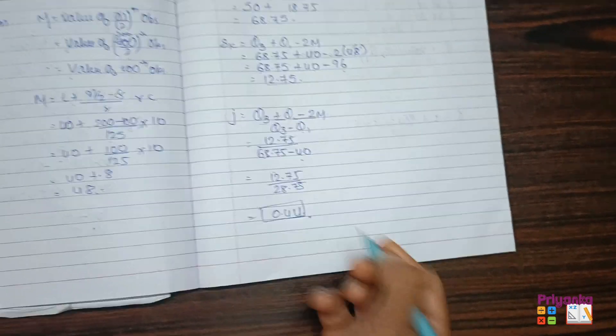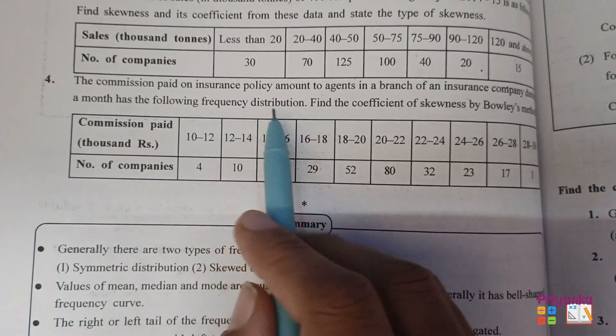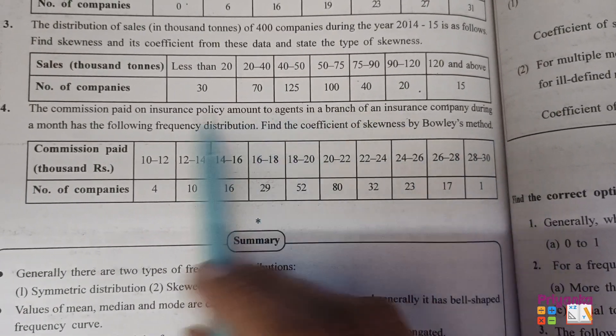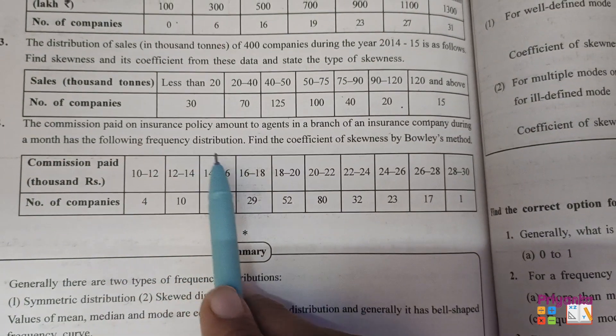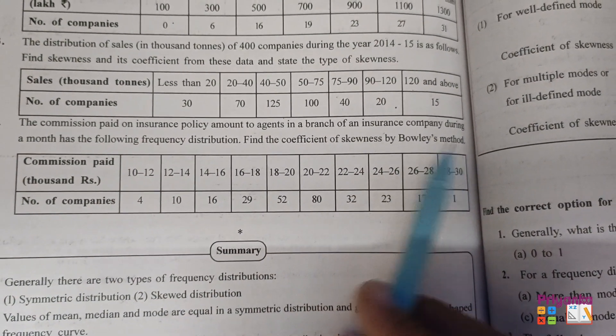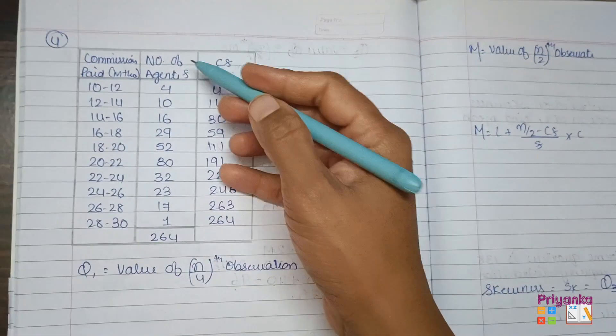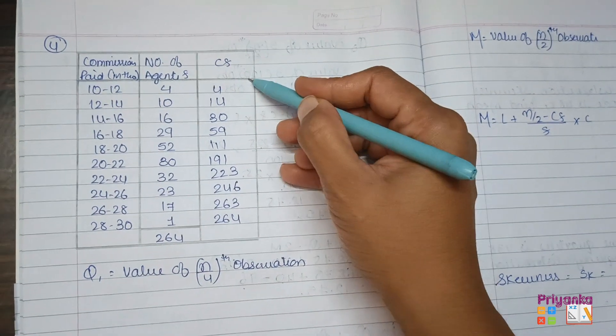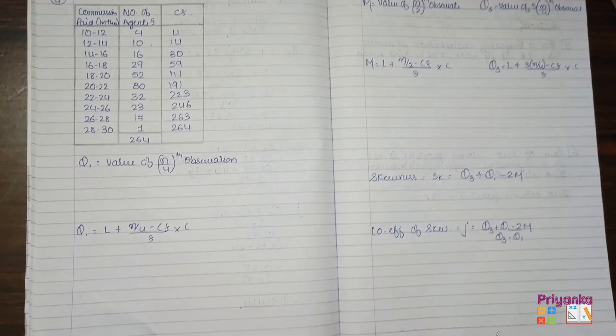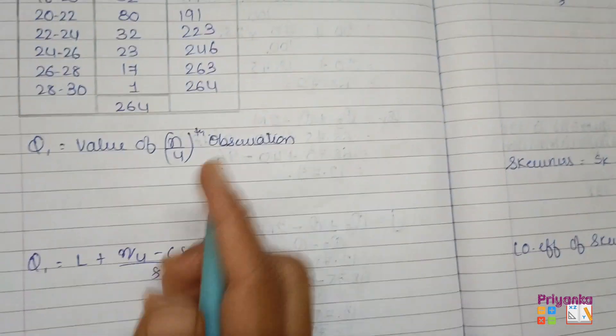Moving to the next, question number 4. The company's paid on insurance policy amount to agent in a branch of an insurance company during a month has the following frequency distribution. Find the coefficient of skewness by Bowley's method. So here is the class and the frequency is given. Here I took in my book and also find out CF out of frequency given. Now out of this, these are the formulas which are going to be used for the Bowley's method. So here I keep the value.